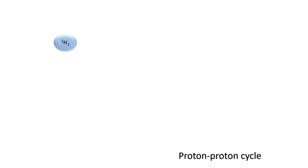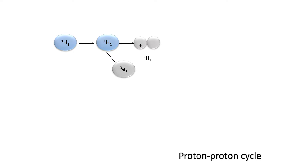Consider there is a proton. If that proton gets combined with another proton, there will be emission of one positron, and of course at each and every step there will be a release of energy due to the mass defect. Along with the positron we will get deuterium. So by the combination of two lighter nuclei — proton and proton — the output is a deuterium nucleus.